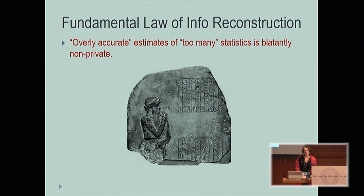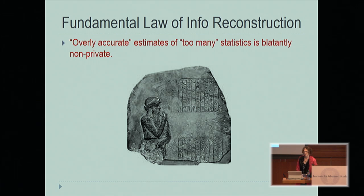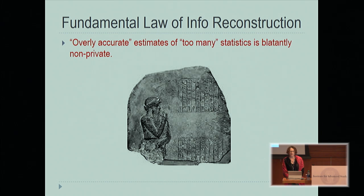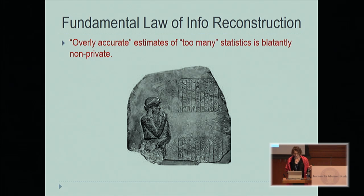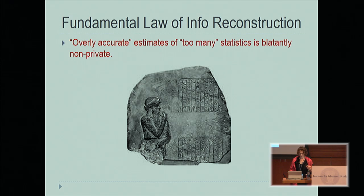To make a long story short, there's a whole host of results that have now become known collectively as the fundamental law of information reconstruction. They say, roughly speaking, that overly accurate estimates of too many statistics completely destroys privacy. This will in fact be touched on rather heavily by Jonathan Ullman in his talk, 'Dusting for Fingerprints.'